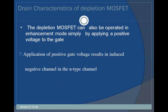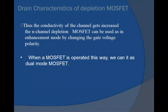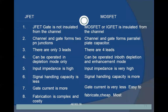The depletion MOSFET can also be operated in enhancement mode simply by applying a positive voltage to the gate. Application of a positive gate voltage results in induced negative charges in the N-type channel, increasing the conductivity of the channel. Therefore, the N-channel depletion MOSFET can be used in enhancement mode by changing the gate voltage polarity. When operated this way, it can be used as a dual-mode MOSFET. This leads to the comparison of JFET and MOSFET.